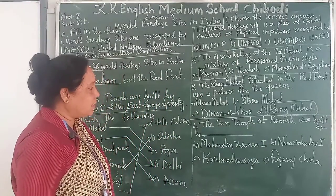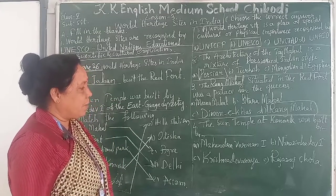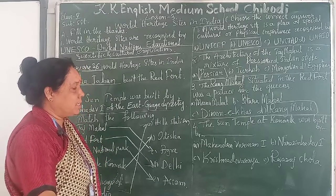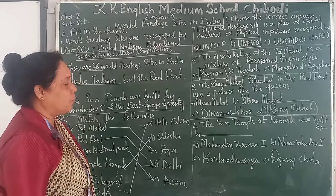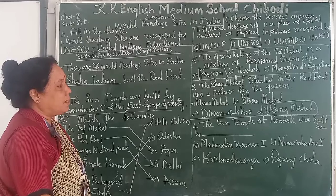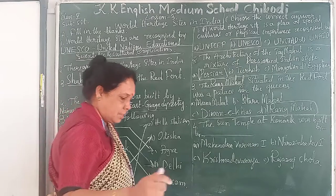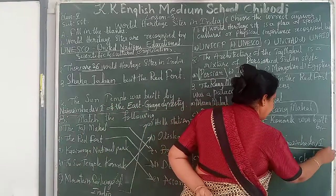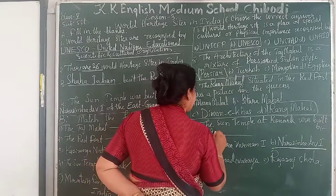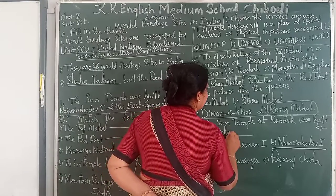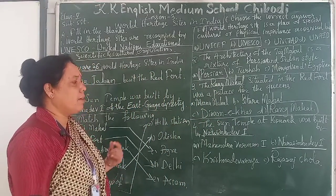Dear students, the next and last question is: the Sun Temple at Konark was built by — options are Mahindra Varman I, Narasimha Deva I, Krishnadeva Raya, and Raja Rajya Chooda. The Sun Temple at Konark was built by Narasimha Deva I.